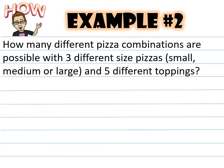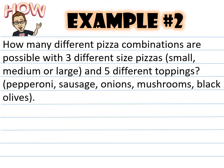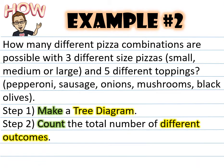Example number two, how many different pizza combinations are possible with three different sized pizzas, small, medium, or large, in five different toppings? Pepperoni, sausage, onions, mushrooms, and black olives. Step number one, you want to make a tree diagram. In step two, count the total number of different outcomes.